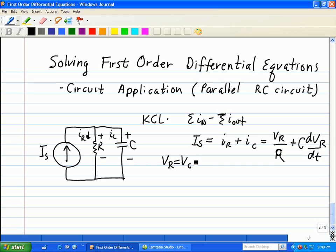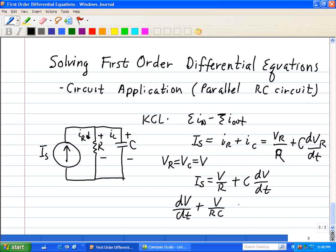Since VR equals V, our current IS now is just V divided by R plus C dV dt. So here's our first order differential equation. We'll put it in standard form, which is dV dt plus V over RC equal IS divided by C.